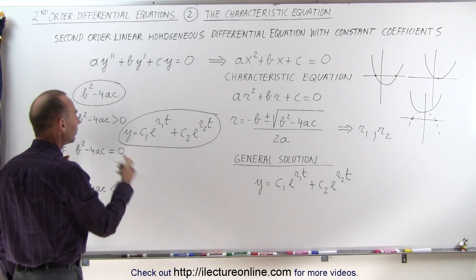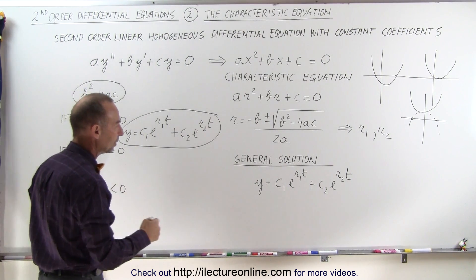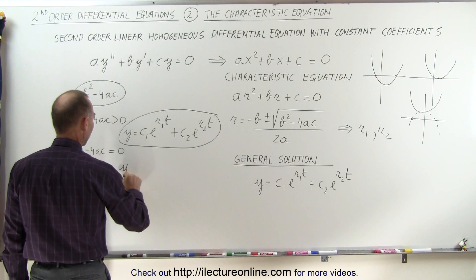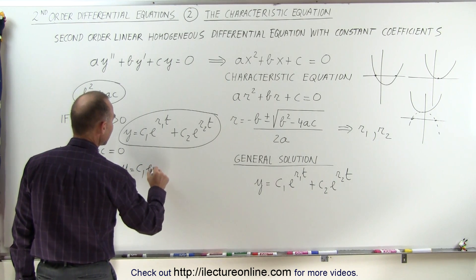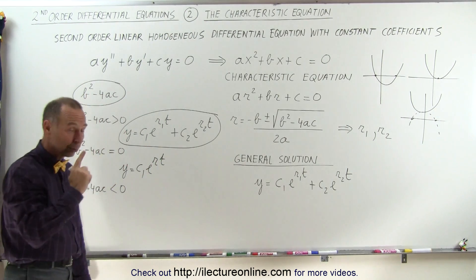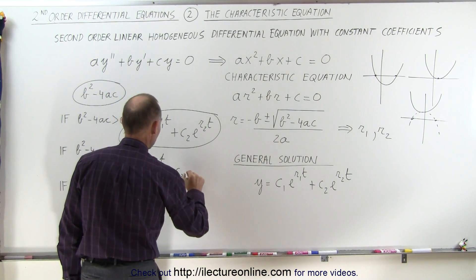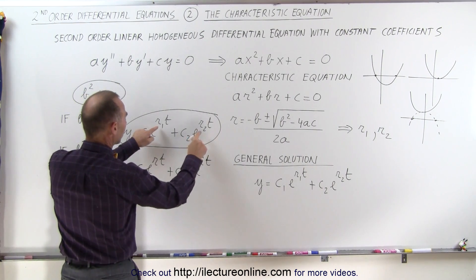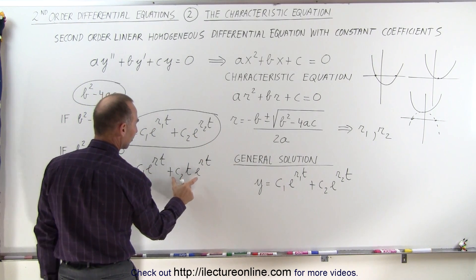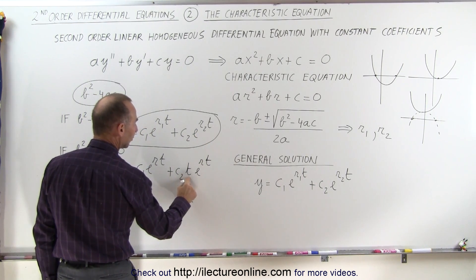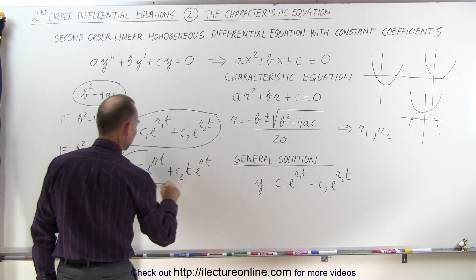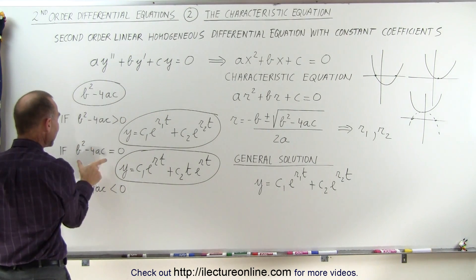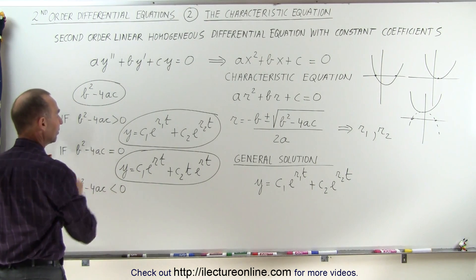If B squared minus 4AC is equal to zero, we get a different solution because now we only have one root. We get Y equal to C1e to the Rt plus C2 times t times e to the Rt. The only difference is that instead of having two separate roots we only have one root, but for the second portion of the solution we multiply by t. This is the general solution when B squared minus 4AC equals zero.